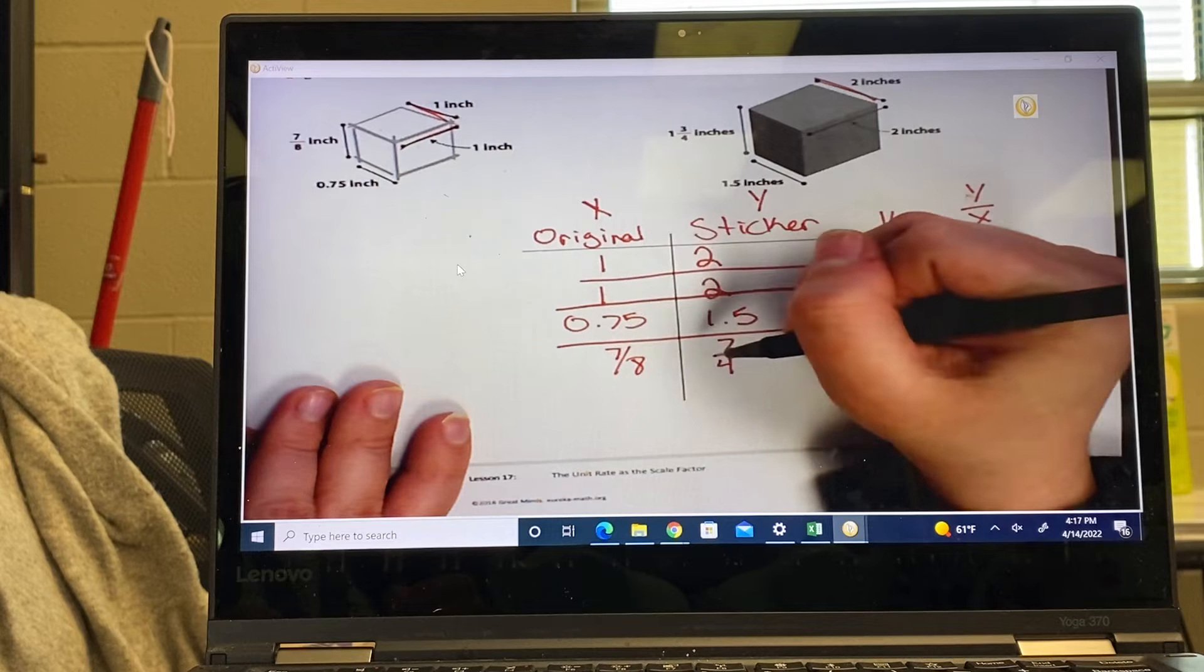So two divided by one is two. Two divided by one is two. One point five divided by zero point seven five, let me get my calculator. And let's see, one point five divided by zero point seven five is also two.